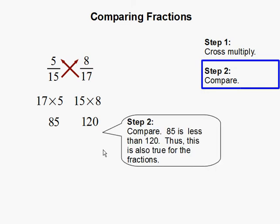Step 2. Now we compare the two numbers 85 and 120. 85 is less than 120. Thus, this is also true for the fraction. And that means 5 over 15 is less than 8 over 17.